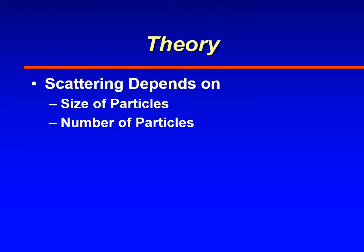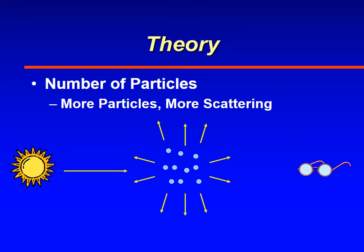The amount of scattering done by particles in the atmosphere depends upon the size of the particle and also the number of particles. The more aerosols, fog droplets, or dust particles in the atmosphere, the more scattering you'll have. So it's directly proportional.